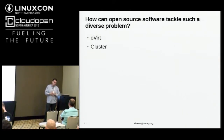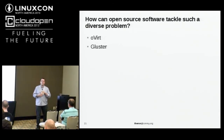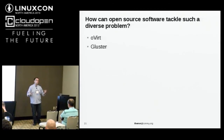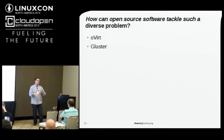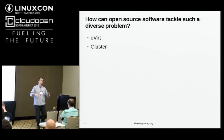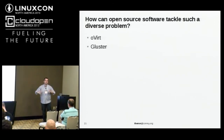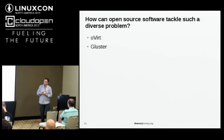The real challenge for converged infrastructure is that file systems, while boring, are ridiculously important. And how we tackle storage is really, really important. So if we're going to layer this together — kind of make a converged infrastructure sandwich — we can use Gluster today.